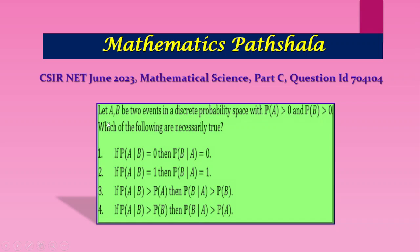The problem is: let A and B be two events in a discrete probability space with probability of A greater than 0 and probability of B greater than 0. Which of the following are necessarily true? This is a problem of conditional probability. Let's check which of the following options are necessarily true using the definition of conditional probability.